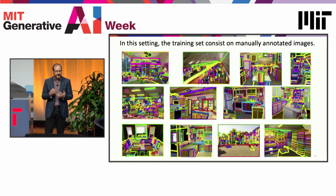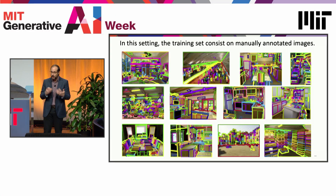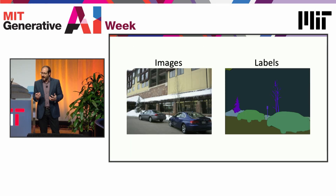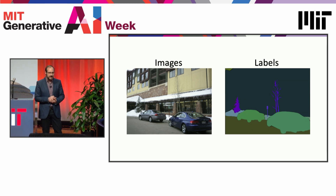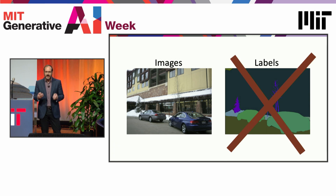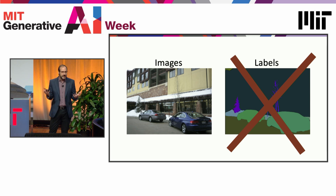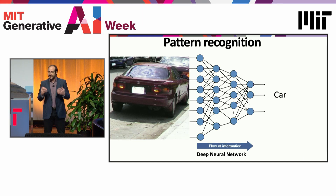My mother has been labeling images for 10 years — she's probably labeling right now — and we use these images to teach computers to recognize patterns. The community has been working really hard to reduce the amount of work required to train these machines. One of the goals was to get rid of the labels: can we teach machines just with images so there is no need for supervision from humans? And the idea was that maybe generative AI was one way of solving this.